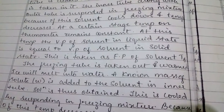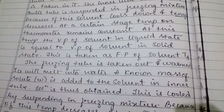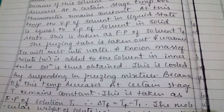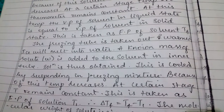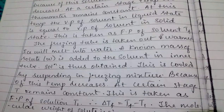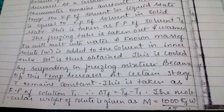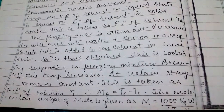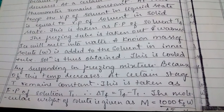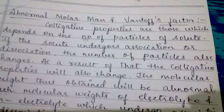The freezing tube is taken out and warmed — ice will melt into water. A known mass of solute W is added to the solvent in the inner tube, and the solution is thus obtained. This is cooled by suspending in the freezing mixture. Because of this, the temperature decreases. At a certain stage, T remains constant. This is taken as the freezing point of solution, T1. Therefore, delta Tf equals Tf minus T1. The molecular weight of the solute is given as M equals 1000 × Kf × W divided by delta Tf × X.